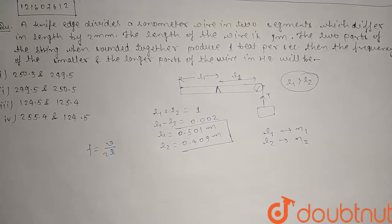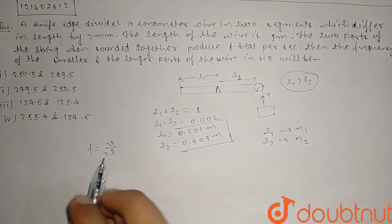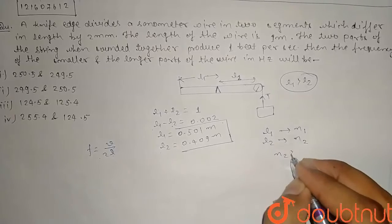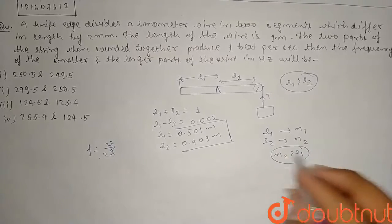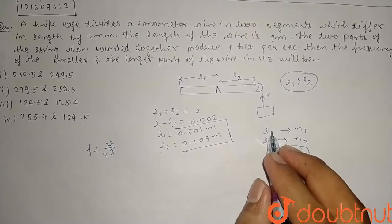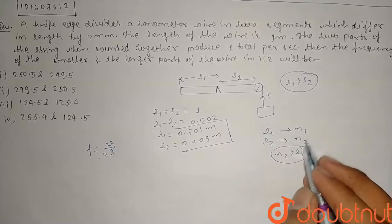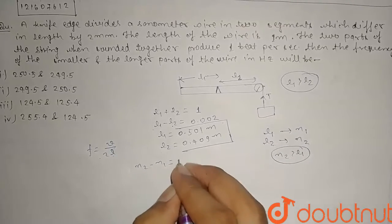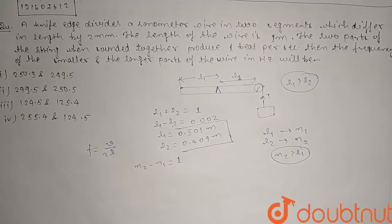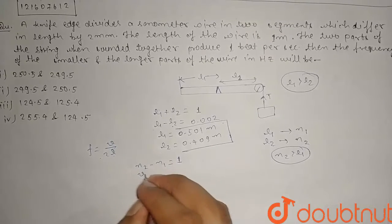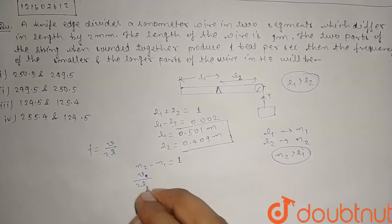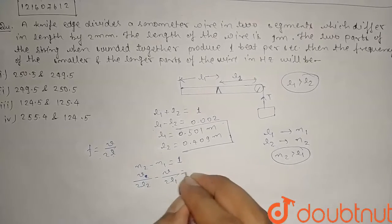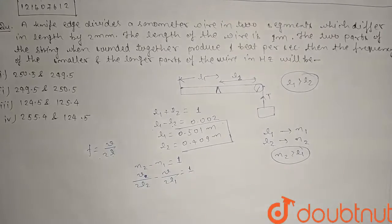Yeh hoti hai fundamental frequency v by 2L. So yahan humein dikhana hai ki if length is more than frequency is less. N2 is greater than N1 because L2 is less than L1. L1 is greater than L2. So yahan humein likhna hai simply N2 minus N1 is equal to 1 because 1 beat per second. And N2 value v by 2L2 minus N1 value v by 2L1 is equal to kya hoga guys 1.